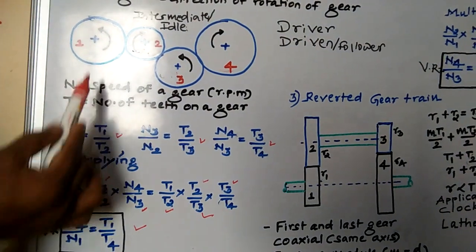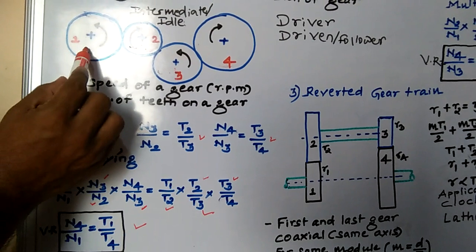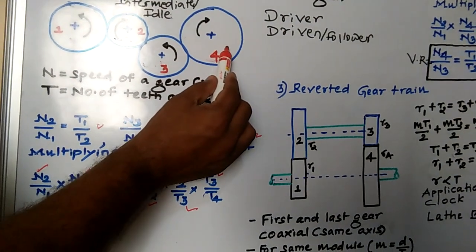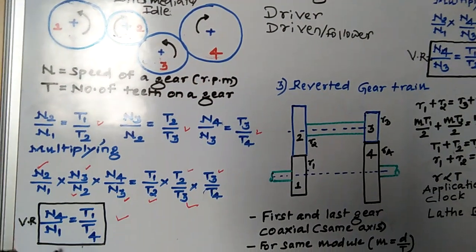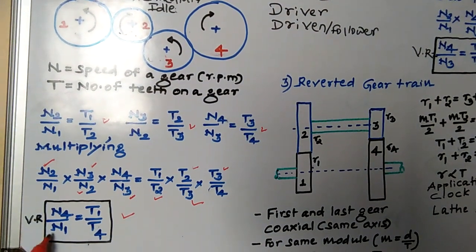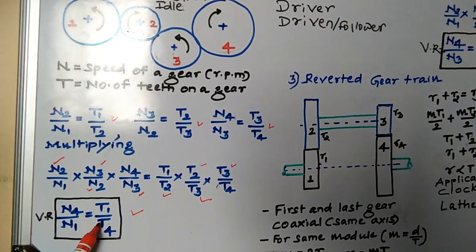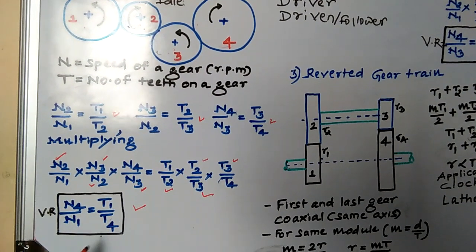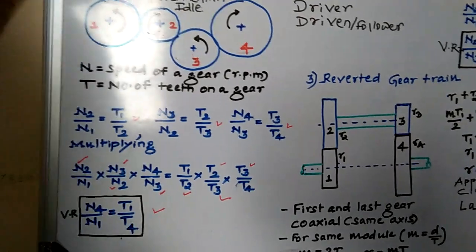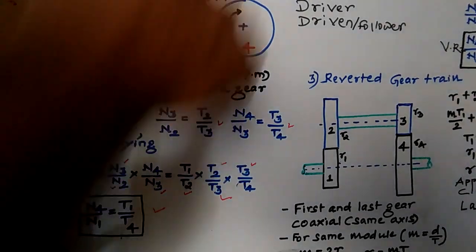If the distance between shafts is more in a simple gear train, we can use intermediate gears. Gear 2 and gear 3 do not appear in the velocity ratio at all. Only the first gear (driver) and last gear come into the picture: N4 by N1 equal to T1 by T4. Now I will move to the compound gear train.